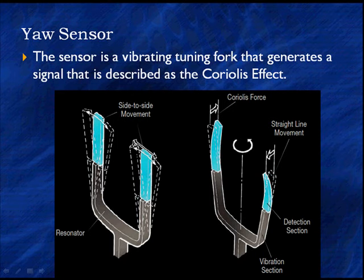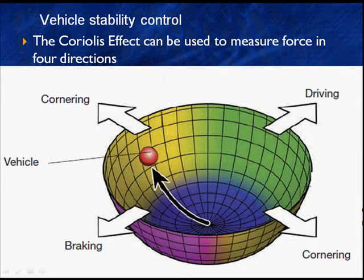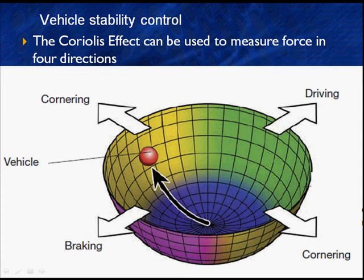The Coriolis effect can be described as the shape water would take in a spinning bowl. The black arrow indicates what the Coriolis reading would be for a vehicle making a hard corner — it's sensing force in four directions. When going straight and level at constant speed, we're at the bottom center. When we corner, the ball rolls up, like a ball in a bowl. The system reads these forces and generates that information to determine we're cornering hard. It then checks whether the steering angle is indicating the correct turning rate.